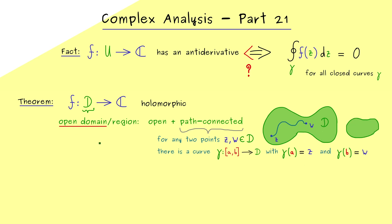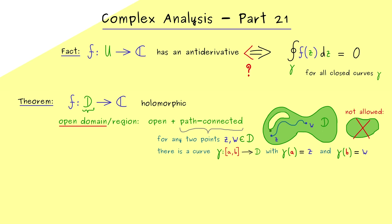Hence, what cannot happen is that D consists of two separate parts. But of course, still, D could have some holes in it. So for example, this part here of D could be missing, as long as we can connect any two points, we would say that a set is path-connected.